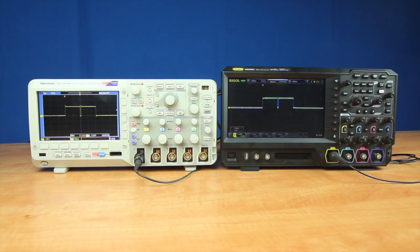Let's compare the memory depth between the Tektronix MSO-2000B series oscilloscope and the Rigol MSO-5000 series oscilloscope. The Tektronix is running firmware version 1.56.